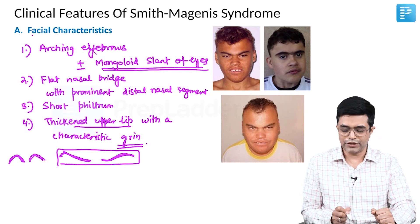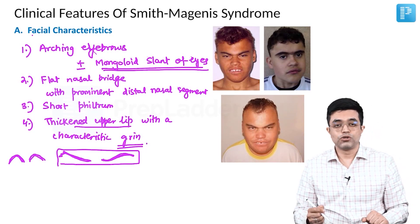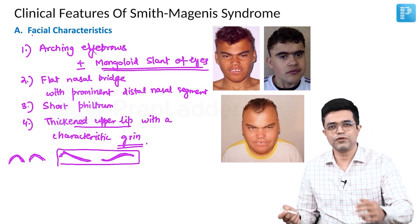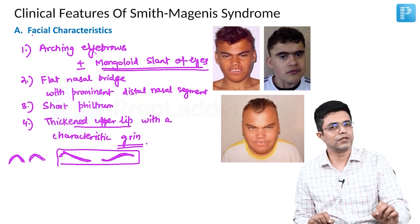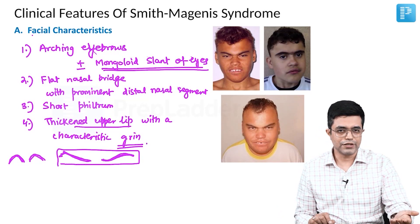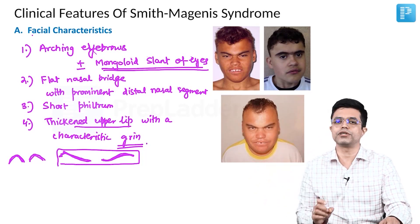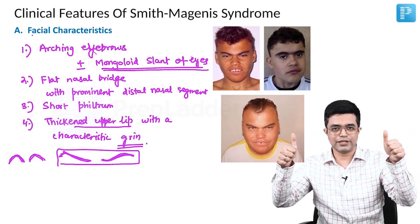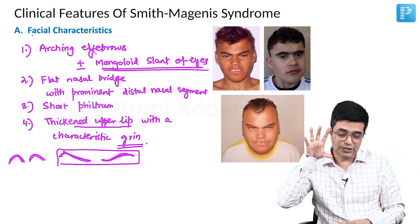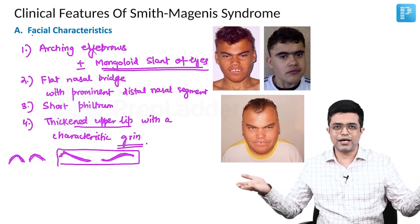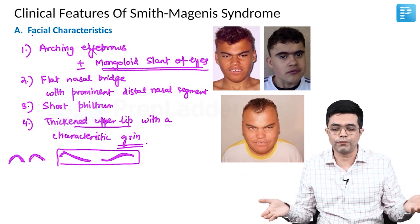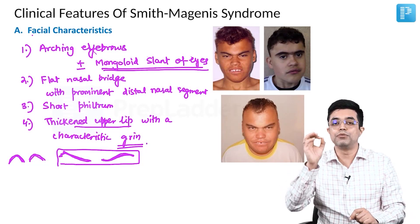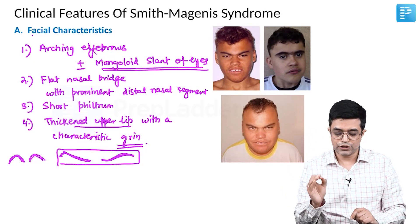In exams, identifying these syndromes by face alone is difficult because features overlap. For Williams syndrome, examiners will mention elfin facies or add cocktail personality or supra-valvular aortic stenosis. For Rubinstein-Taybi, they will show broad thumbs or great toes alongside the face. For Smith-Magnese, they will show the face and mention it is a micro-deletion syndrome, or add that the patient has abnormal circadian rhythm — that clue should direct your thinking toward Smith-Magnese syndrome.